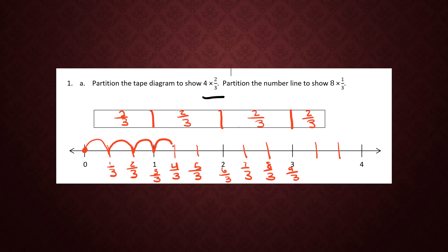3, 4, 5, 6, 7, 8. So I have partitioned my number line to show 8 times 1 third.